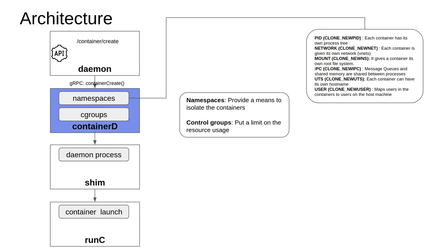Similarly, for the network namespace, the network interfaces available on the host or guest operating system on which the container is running will be totally independent, and they can potentially be shared, though for the most part you won't do that in Docker applications. Each container will have its own virtual network interfaces. Similarly, for mount points, each container will have its own root file system — the container creates a mount point on which the root file system is established, and all container-related files are boxed within that mount point.